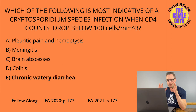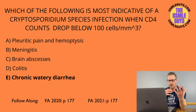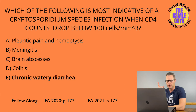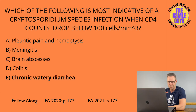The correct answer is E. Once we drop to below 100 cells per millimeter cubed, the immune system is extremely weak and there are many more concerns. The biggest things to keep in mind are Aspergillus fumigatus, CMV, Cryptococcus neoformans, Cryptosporidium species, EBV, Toxoplasma gondii, and the Mycobacterium avium complex — MAC. We worry about MAC most once the CD4 count drops below 50.